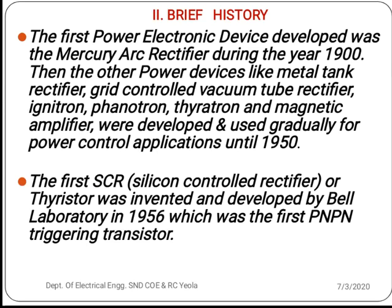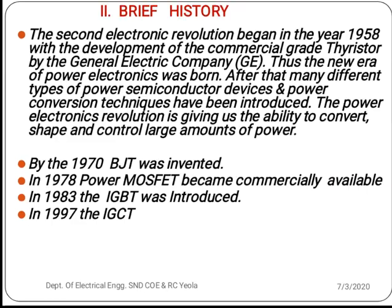The first SCR — Silicon Controlled Rectifier, also known as the thyristor — was invented and developed by Bell Laboratory in 1956. It was the first PNPN triggering transistor. Then in 1958, the second electronic revolution began with the development of the commercial thyristor by General Electric Company, and thus the new era of power electronics was born.